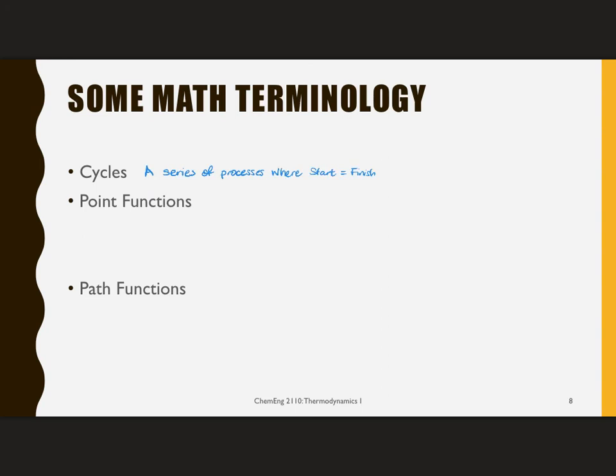From your calculus course, you may remember that for certain functions, if you integrate over a cycle, the value of that cyclic integral is exactly equal to zero. And these are called point functions. On the other hand, we also have something called a path function that is dependent on path, and the integral is not equal to zero.